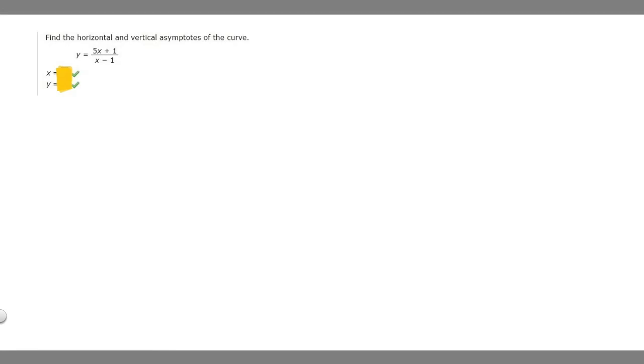In this problem, we're asked to find the horizontal and vertical asymptotes of the curve. We're given the function y equals 5x plus 1 over x minus 1.